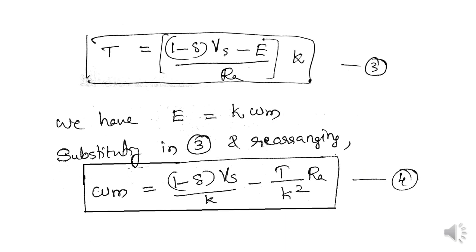To get the speed equation, we use the back EMF relation E = k·ωm, which is proportional to speed. Substituting this into the torque equation and rearranging, we obtain the speed expression: ωm = (1 − δ)·Vs / k − Ra·T / k².